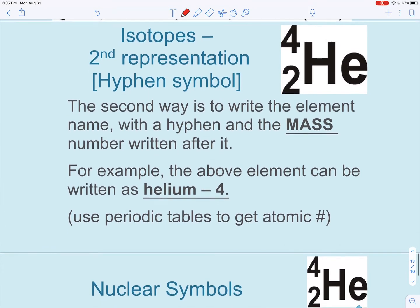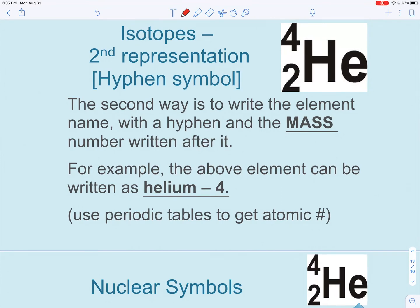A second way to represent our isotopes is to use this hyphen notation. The mass number is going to be written after the element name. In order to find the atomic number, we're just going to find our element on the periodic table. For helium-4, I might not know the atomic number of helium, but if I looked at my periodic table, I'd see easily that helium always has two protons. Two different ways to represent our isotopes. You should be familiar with both, be familiar with writing both.